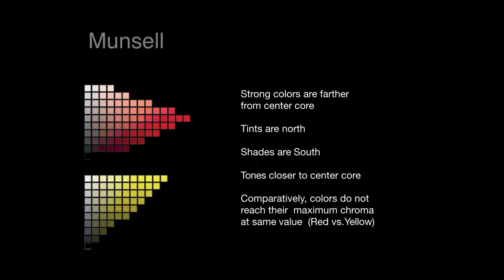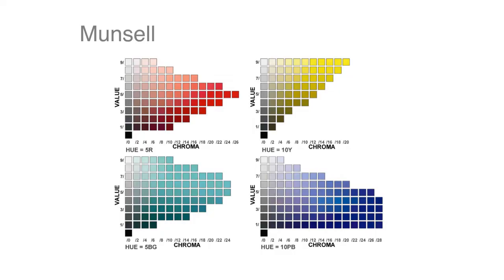yellow at maximum chroma in the Munsell, is always going to be lighter than red at maximum chroma. And that is also true with Itten. Yellow's normal value is always lighter than any of the other hues on his circle.